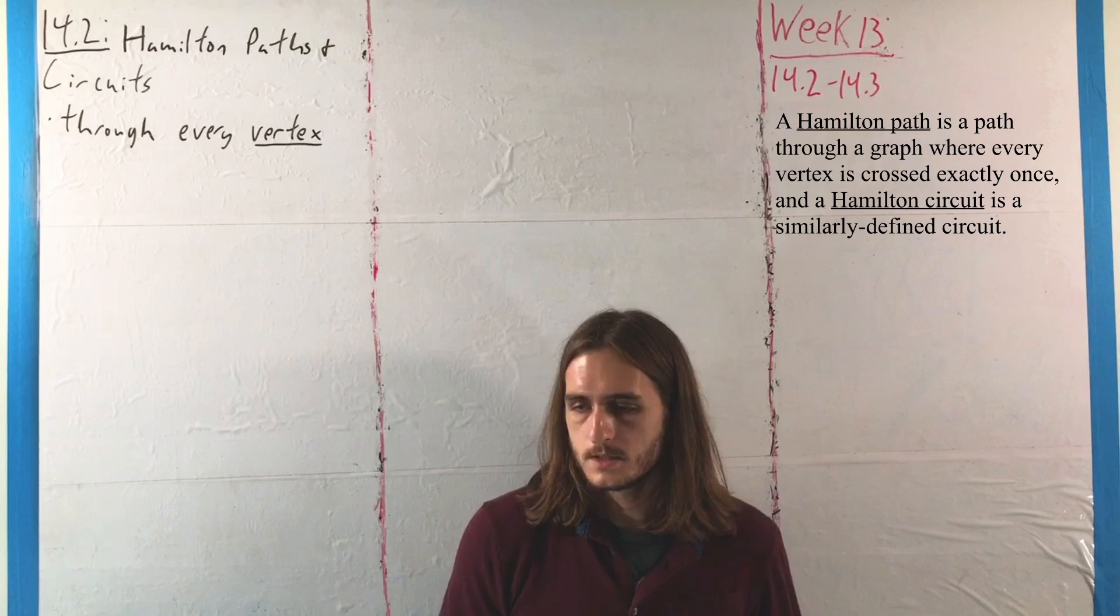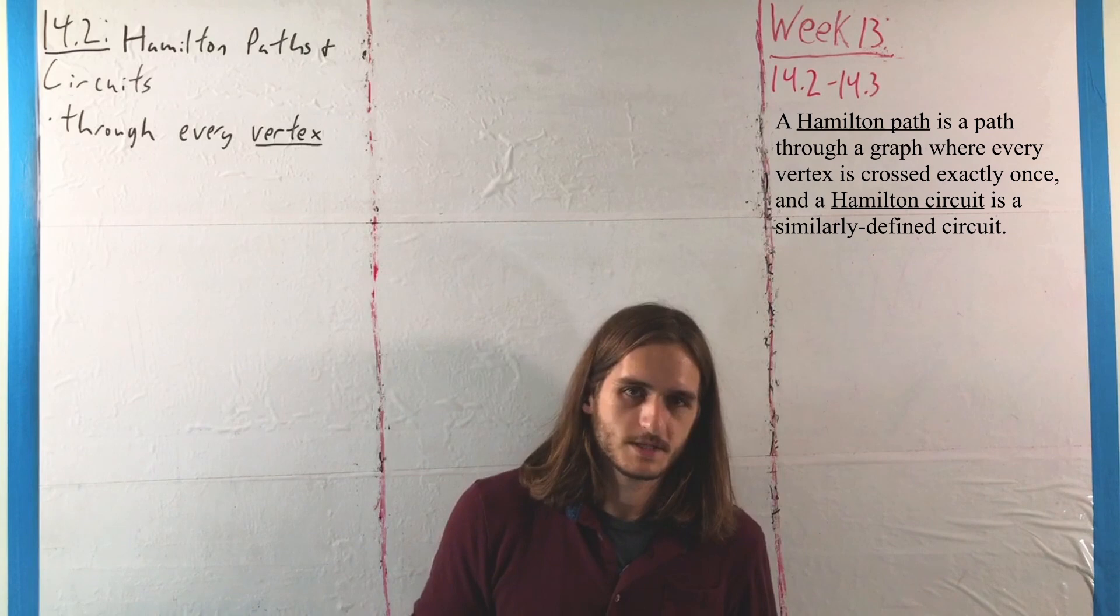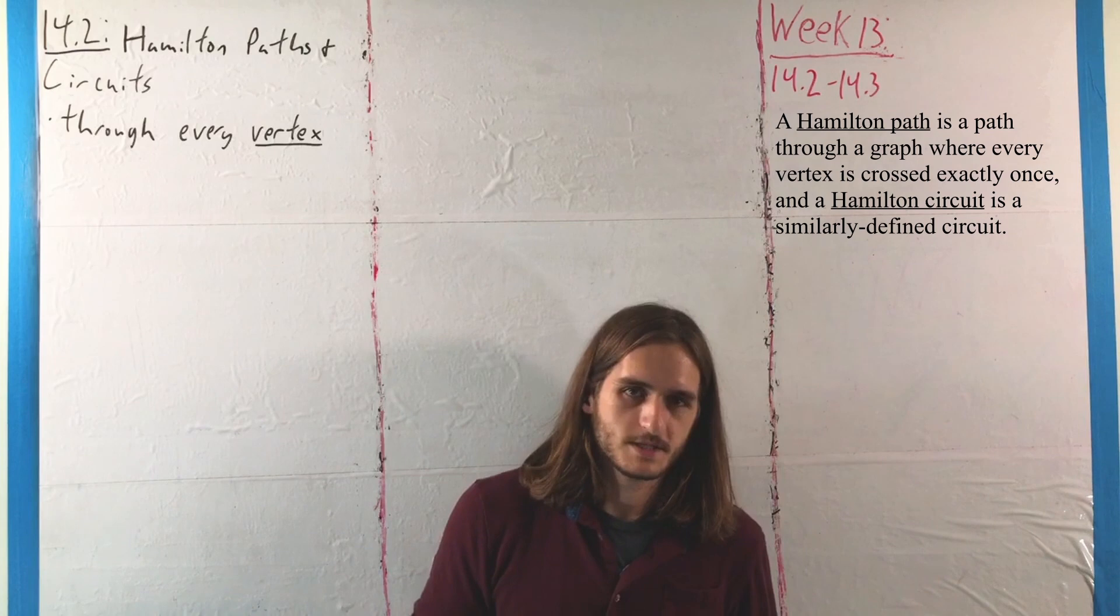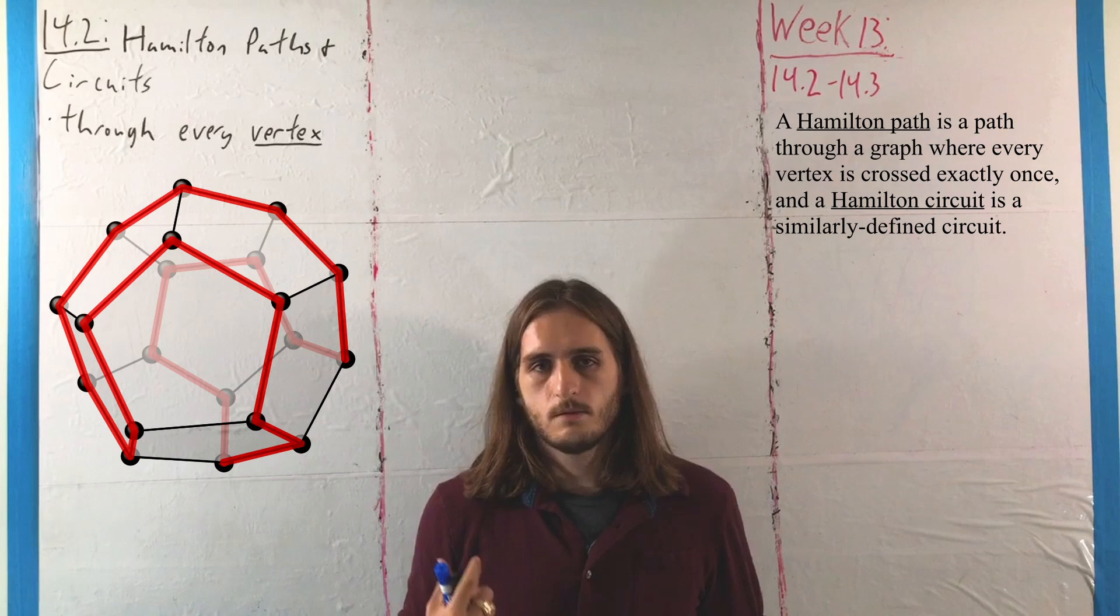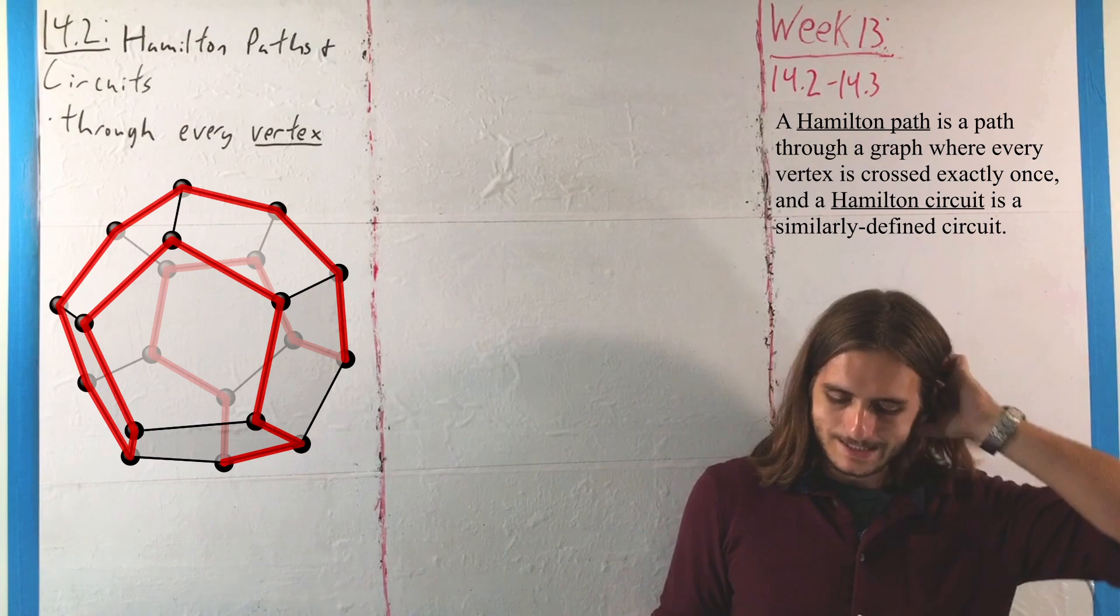What he was working on was a puzzle called the Eicosian Game, which is sometimes now known as Hamilton's Puzzle or Hamilton's Game, to reference this work in particular, where what this was talking about was being able to find paths along the edges of a dodecahedron, a 12-sided polyhedron, that touched every vertex exactly once, where you can see that flattened out representation in terms of a graph as well.